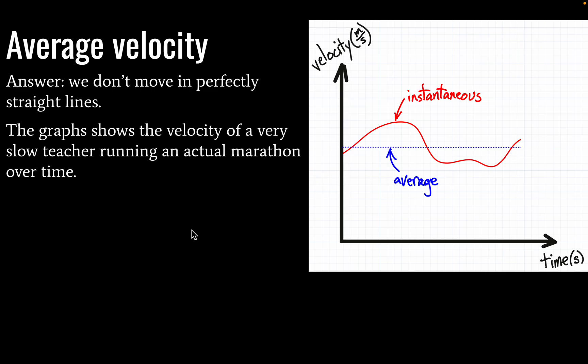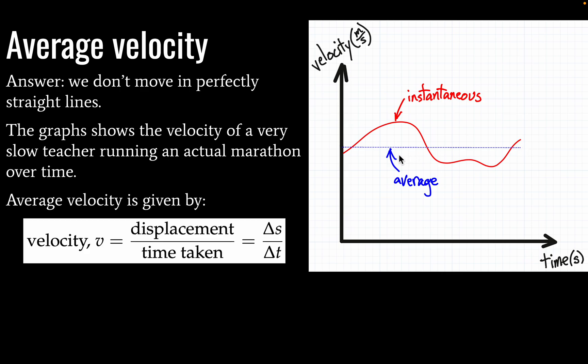Okay, so here's a graph showing the velocity of a very slow teacher running a marathon over time. Okay, and what we'll see here is my velocity is changing during this whole thing. Okay, so at any single point in time, we can look at my instantaneous velocity, but over the entire marathon, we would think about an average velocity that might look something like this.